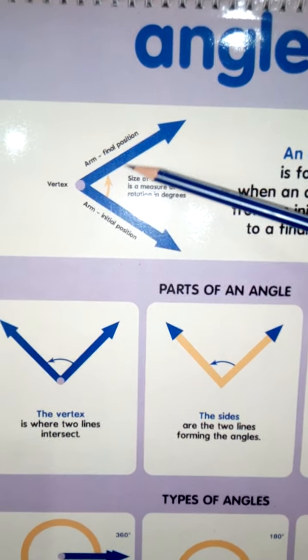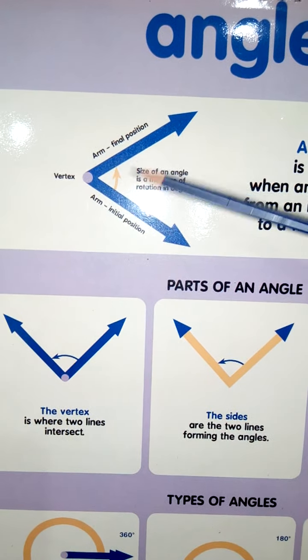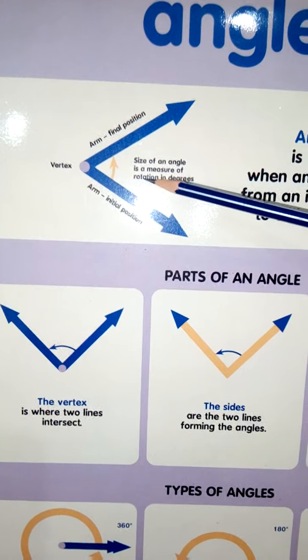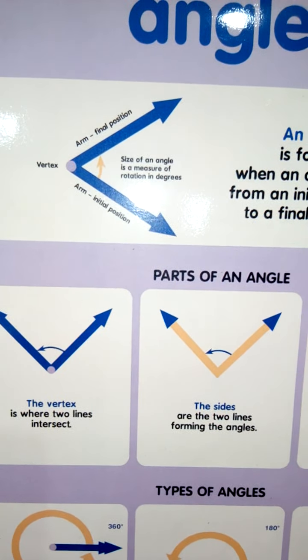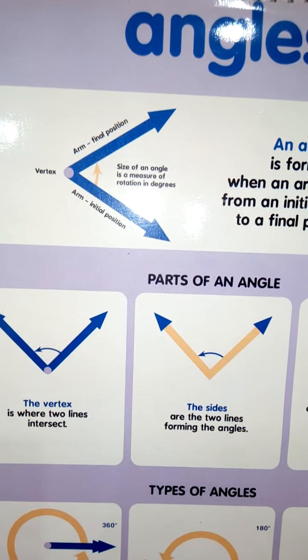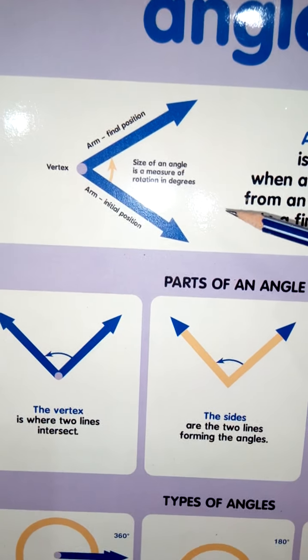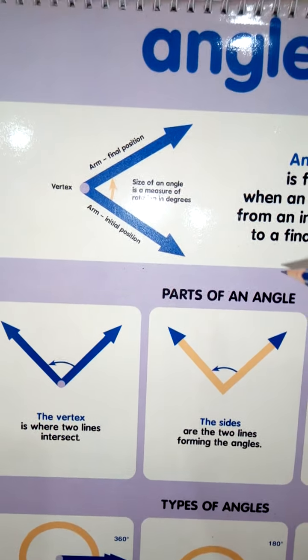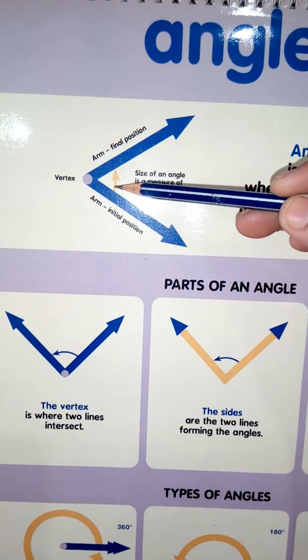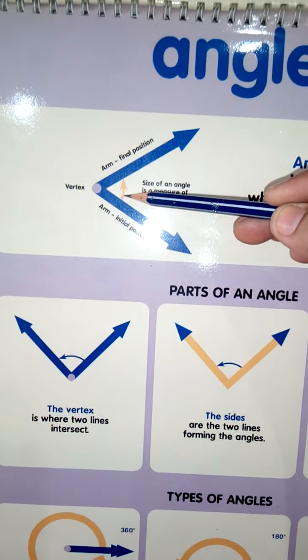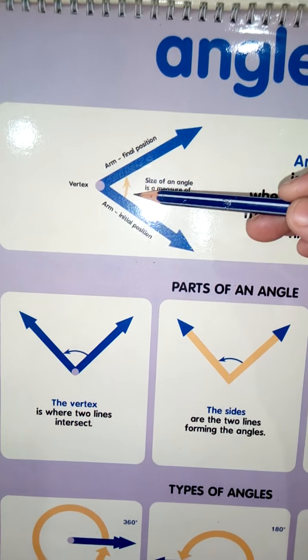After moving these arms, there will be some movement in between. There will be some rotation in between or there will be some distance created in these two arms. This movement, this rotation will be shown by this arrow and this rotation has a special name.